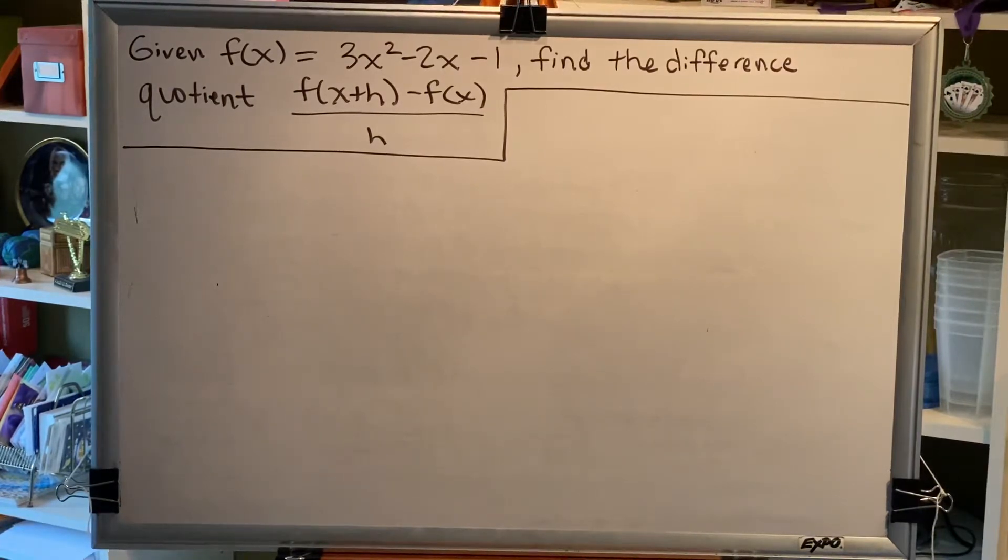Let's look at a problem where we find a difference quotient. Here we go. Given f of x equals 3x squared minus 2x minus 1, find the difference quotient.